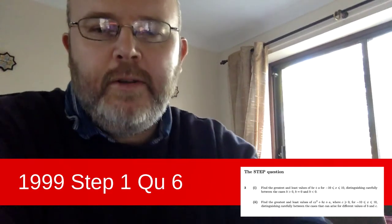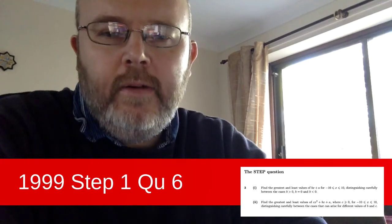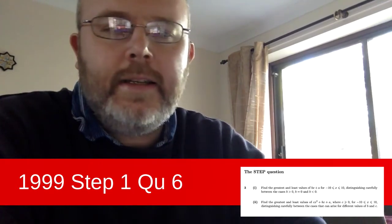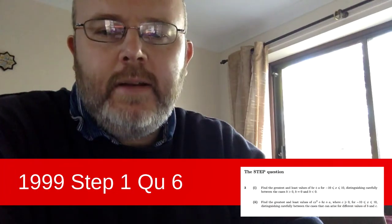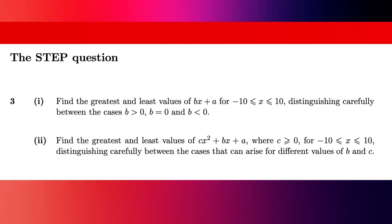Hello and welcome to another STEP question. This is my second one and it's STEP 2, from the 1999 paper, question six. It's a bit tricky, so let's get started. The question asks: find the greatest and least values of bx plus a for x values between minus 10 and 10, distinguishing carefully between the cases b greater than zero, b equal to zero, and b less than zero.